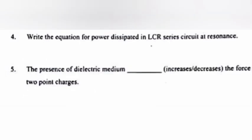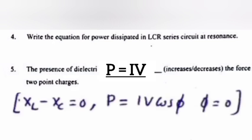Question 4: Write the equation for power dissipated in LCR series circuit at resonance. Answer: P is equal to IV. In detail.